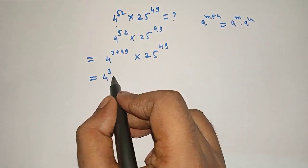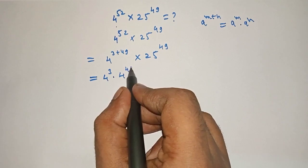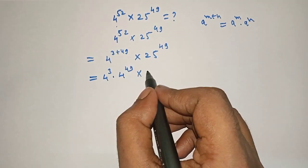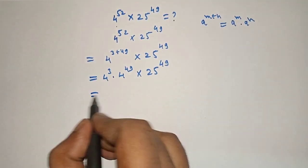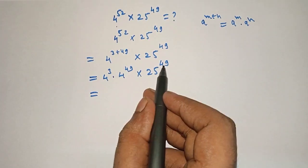Therefore 4 raised to 3 times 4 raised to 49 times 25 raised to 49. Here the exponents are same, so we will take it as a whole.